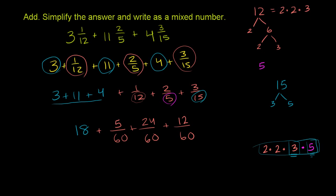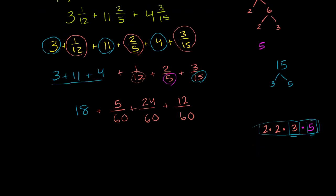This is going to be 18 plus, and then over 60, we have 5 plus 24, which is 29. 29 plus 12—29 plus 10 would be 39, plus 2 would be 41.